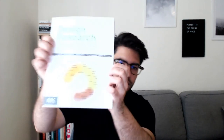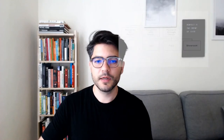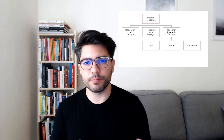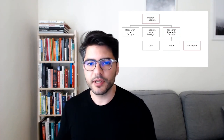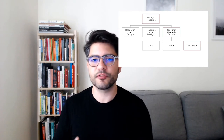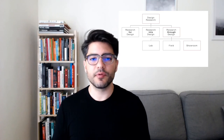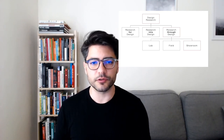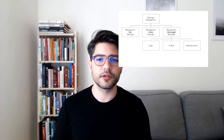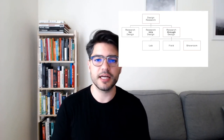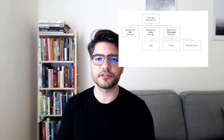The book talks about three different kinds of constructive design research, given away by the subtitle on the cover: the lab, the field, and the showroom. The lab approach is when you make an artifact, then bring in people to try it and provide knowledge relating to your research questions. This could be usability studies, experiments, and focus groups — an approach closely related to how research is done in psychology, and might involve quantitative research, numbers, and statistics.